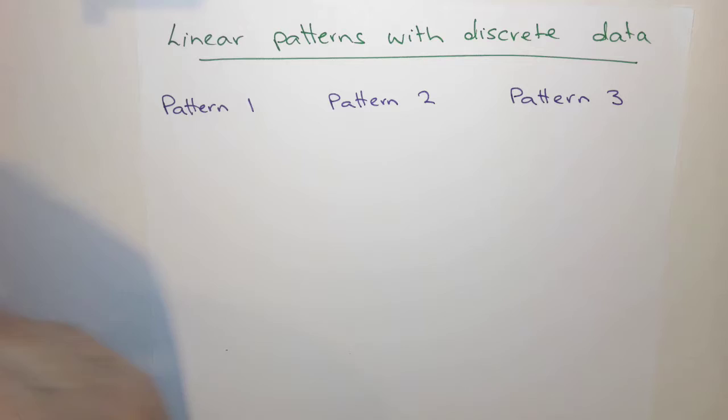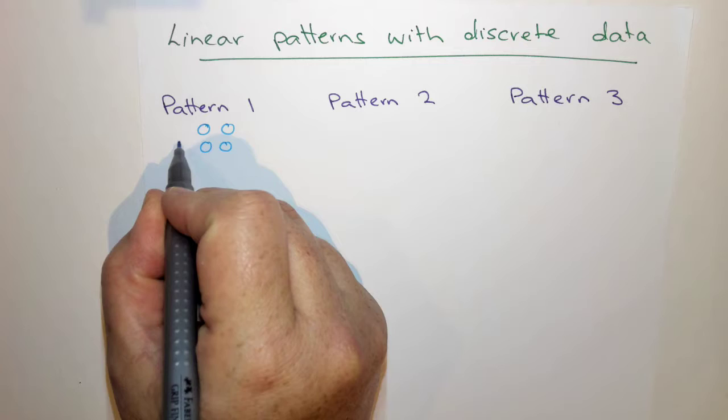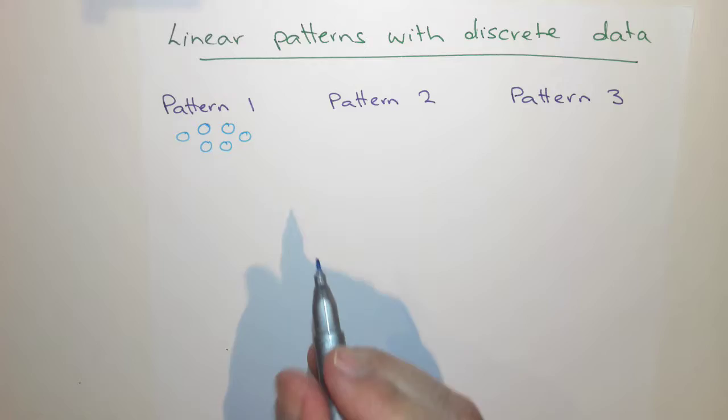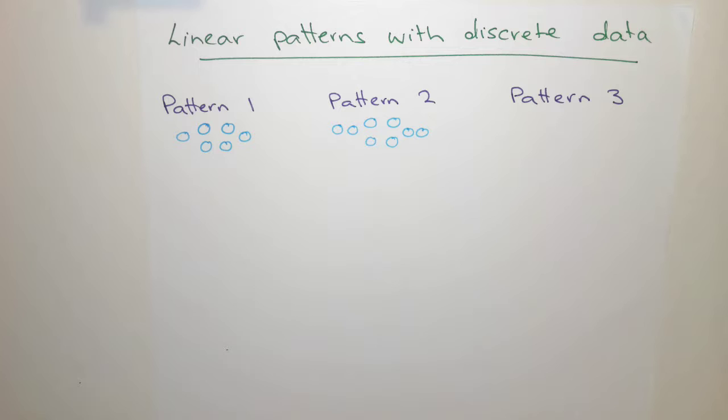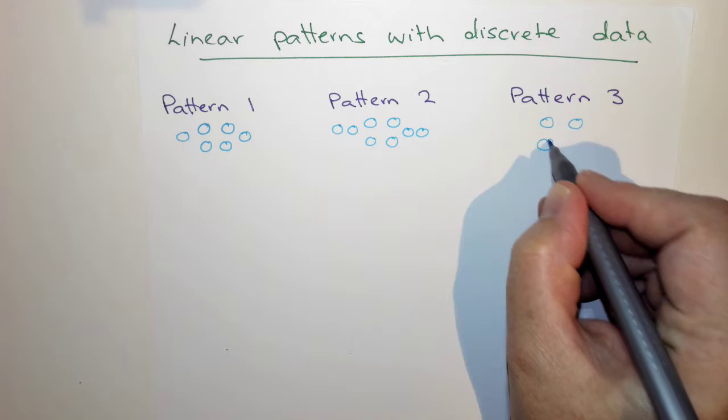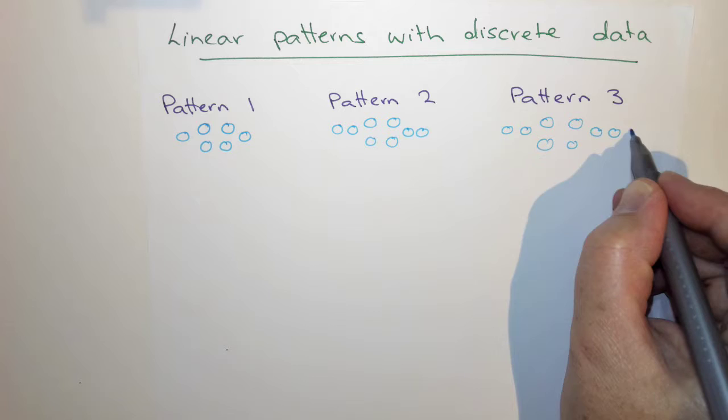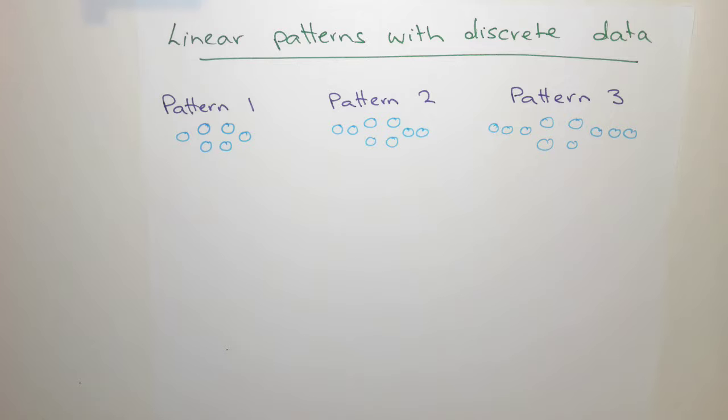So let's have a look at a particular pattern to start with. In pattern number one — and this is the same one in your book — it starts with four buttons in the centre and a button on either side. Then we go to pattern number two, which still has the four buttons at the centre, and the pattern on the side, and now it adds another one on each end. Pattern number three takes the four buttons at the centre, the two patterns on either side, and adds another one to that.